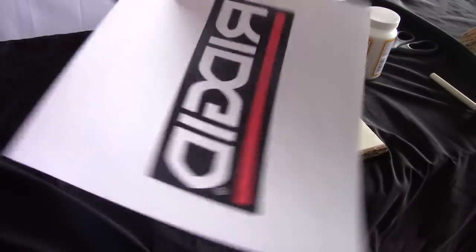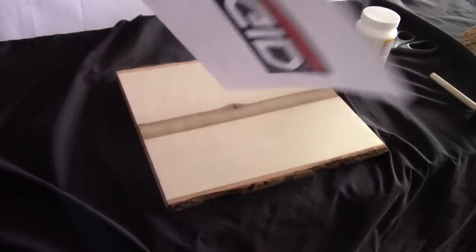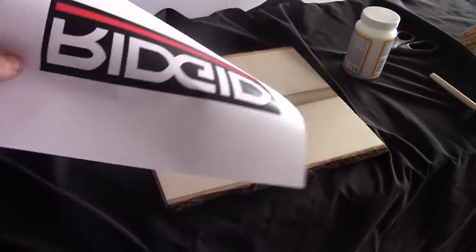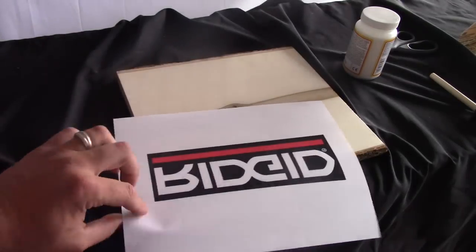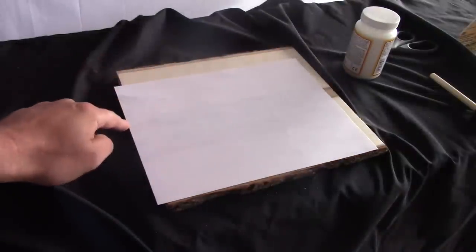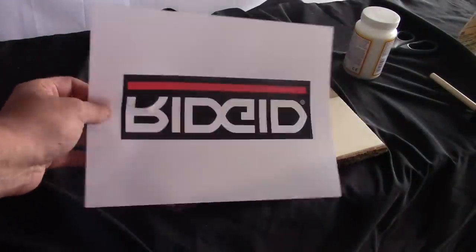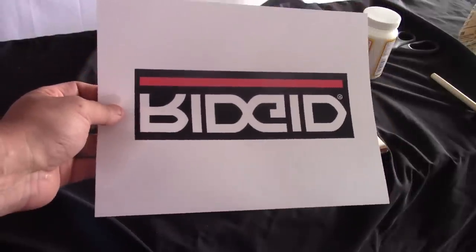Now the next thing you need is a picture of the logo that you're trying to transfer. You want to make sure that this is printed out on laser jet, not inkjet, it just won't work. And you want to make sure that the picture is upside down, so when you turn it and you put it on the piece of wood, it'll actually come out the right way. So it has to be laser jet and printed upside down.